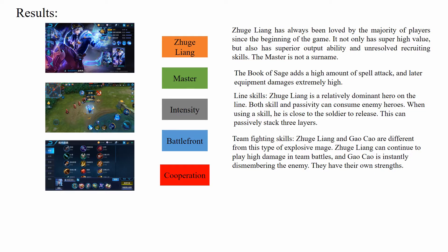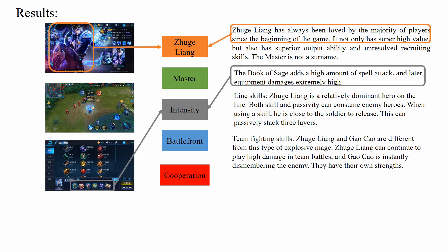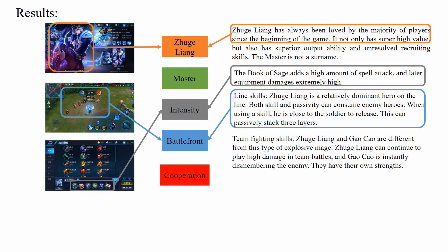For example, the article has separate three images and four content paragraphs. We can predict the Zhejiang, intensity, and battlefront labels from both the images and contents, while predicting the master and cooperation labels from the context.